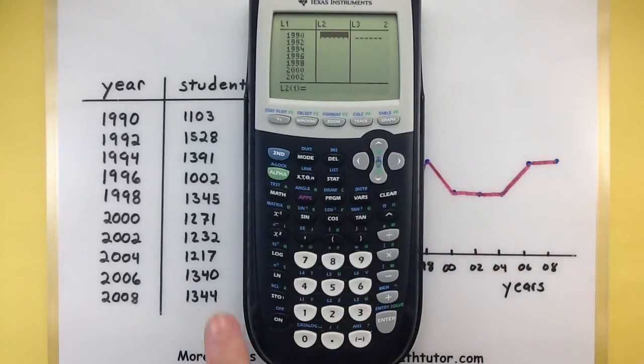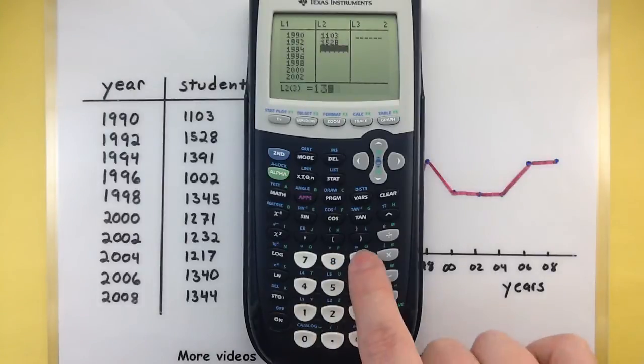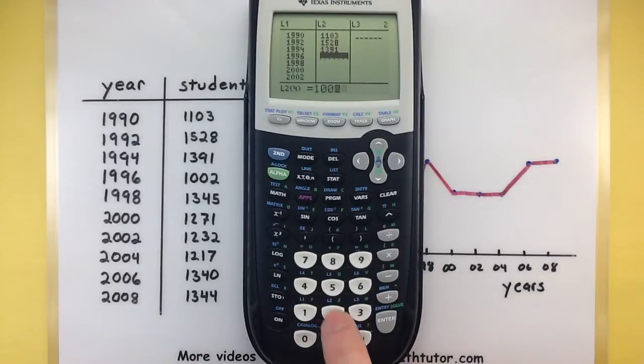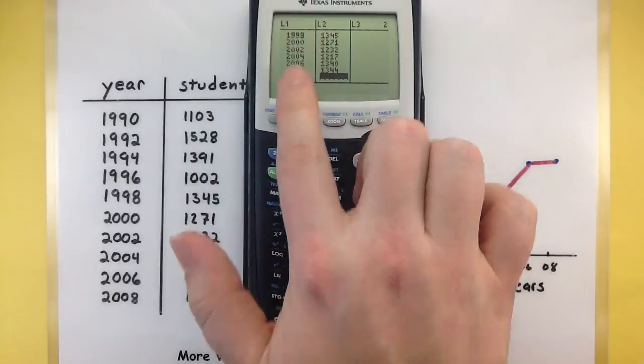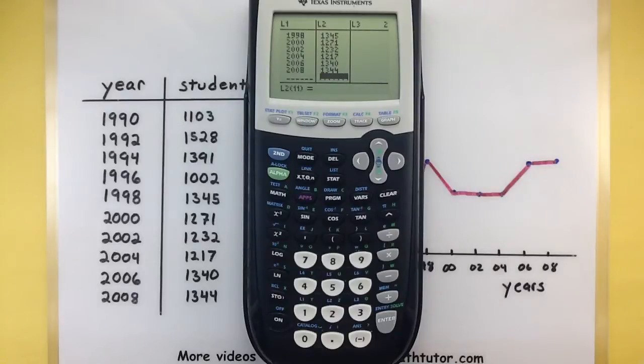Press the right arrow button, let's jump over to that list and enter in our enrolled students. So 1103 all the way down. All right perfect, it looks like both of our lists are exactly the same size so chances are I didn't miss any data points in there.